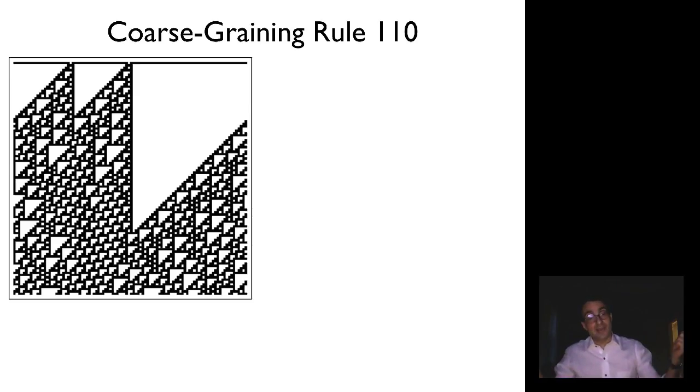not only can I do the computation in half the time, because instead of going from T to T plus 1 to T plus 2, I can jump from T to T plus 2, but I can also do it in half the space, because that projection operator takes pairs of cells that make a supercell and projects it down to this new coarse-grained object.